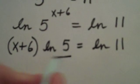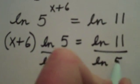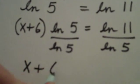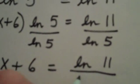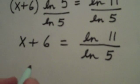I'm going to divide both sides by the natural log of 5. That gives me x plus 6 equals the natural log of 11 divided by the natural log of 5.